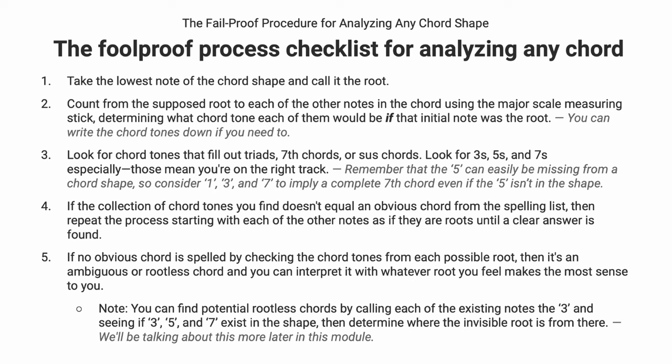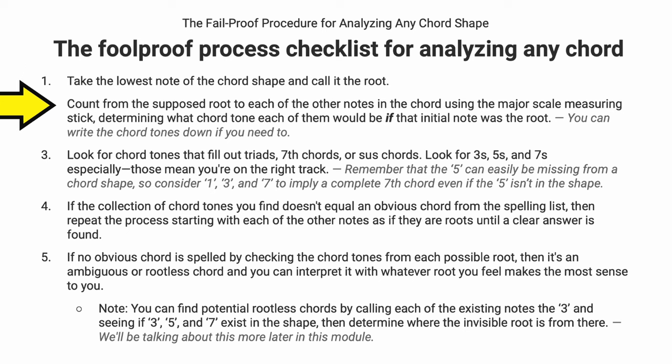Here is my process checklist that I teach in my course Chords on Command, which we're going to walk through now. There is some prerequisite knowledge necessary, but I'll let you know what that is so you can work towards it. We're going to take the lowest note of a chord shape and call it the root to start. We're doing a process of elimination to figure out where the root is, and from the root, the interval distances of all the other notes — and therefore the chord name, label, and quality.